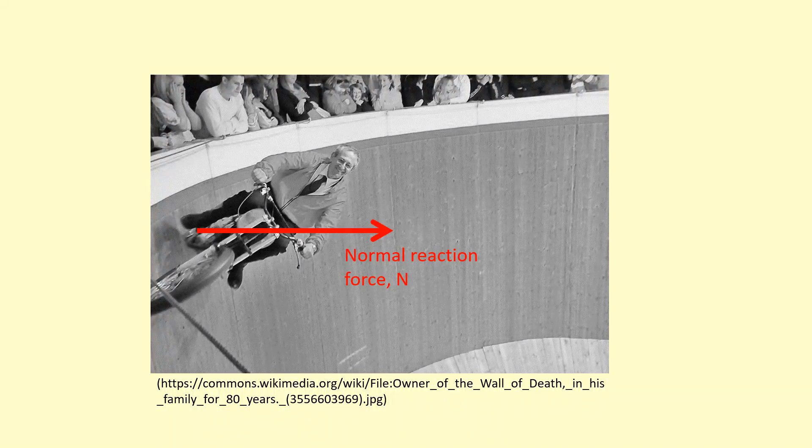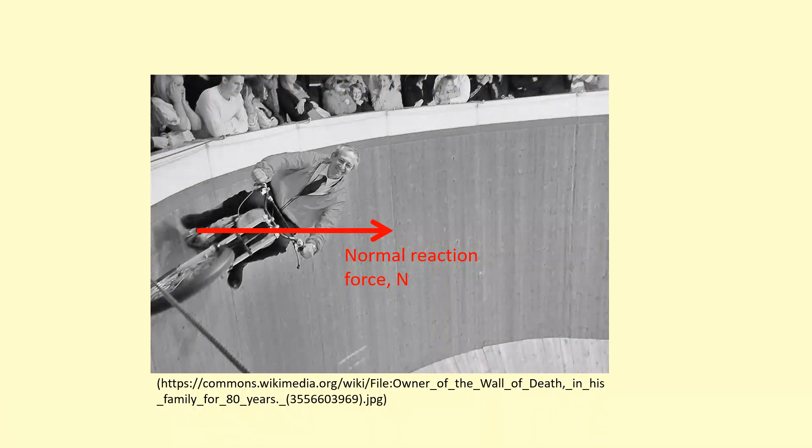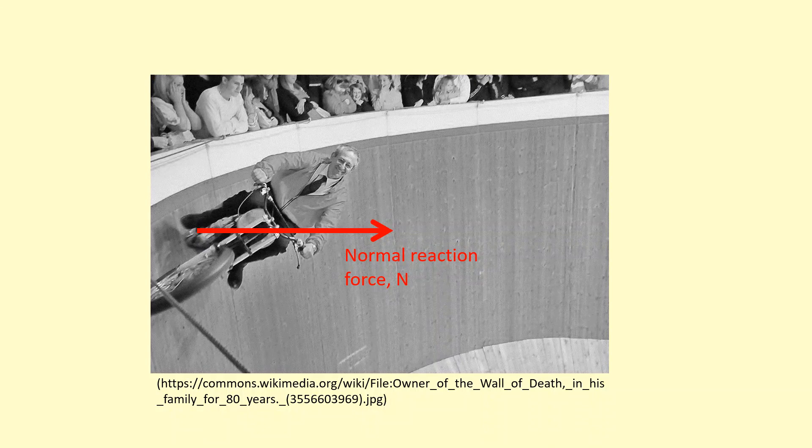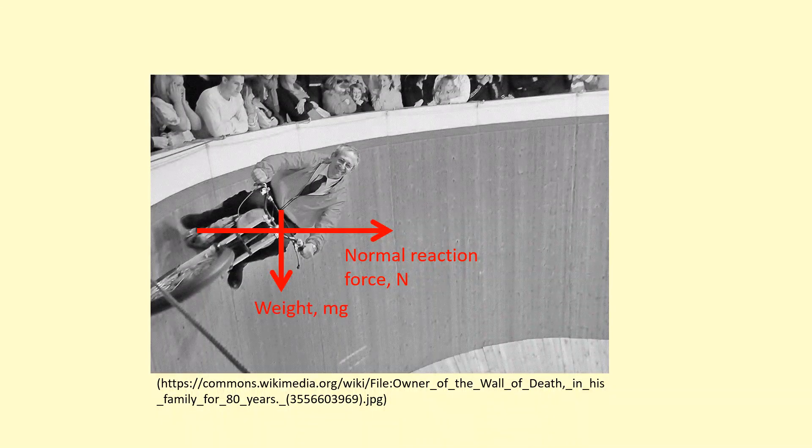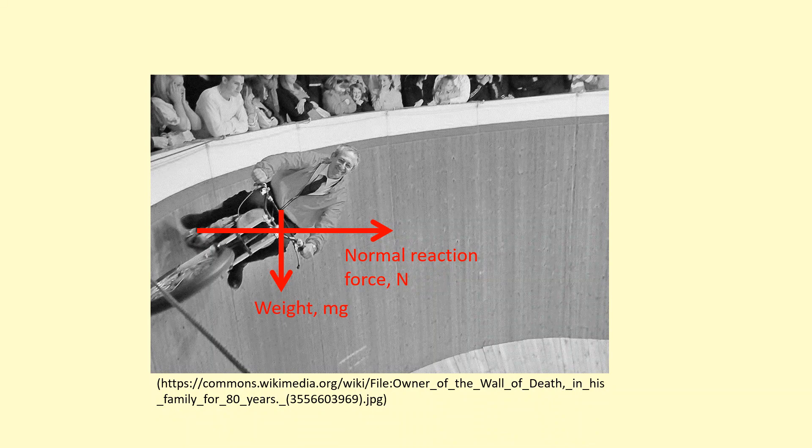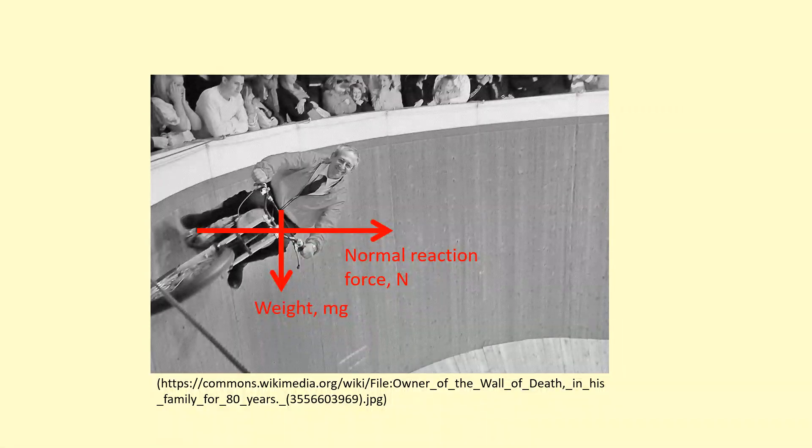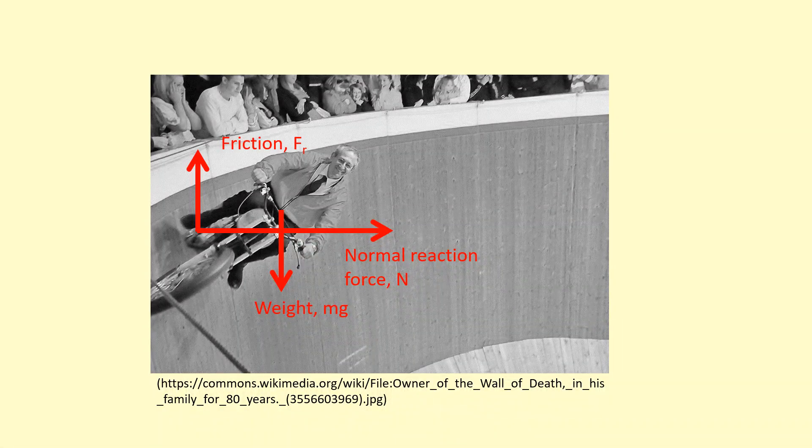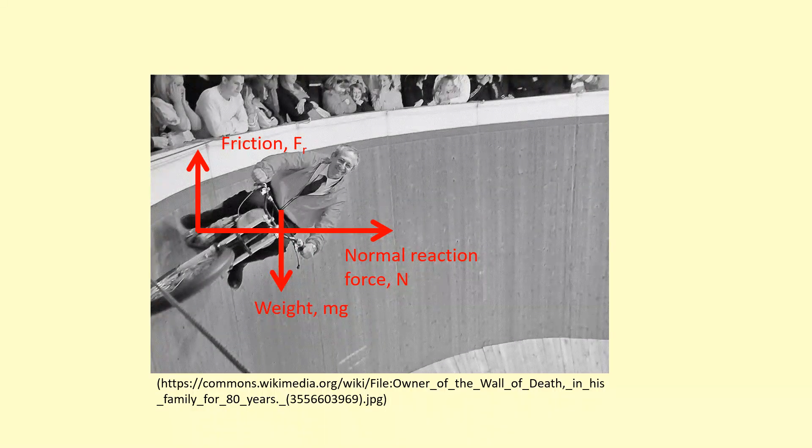At 90 degrees to the surface, we've got a normal reaction force, which is acting towards the center, and that's going to equal mv squared over r. But there's weight acting downwards. And so what's preventing it from falling downwards? It's actually the friction here. So the friction is balancing the weight and ensuring that it stays in the horizontal cycle.